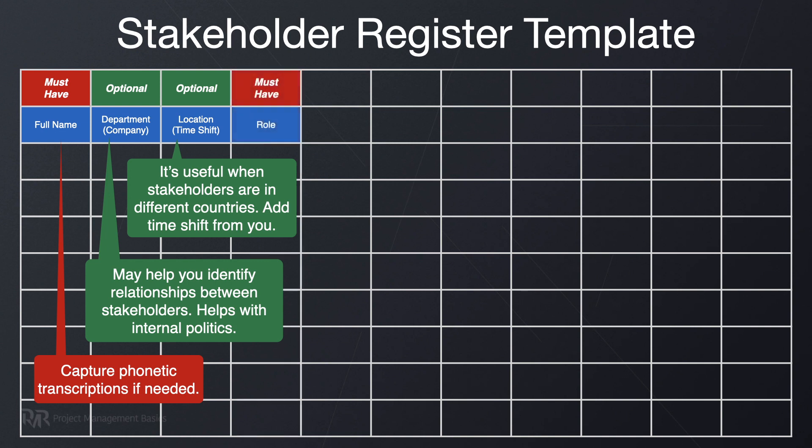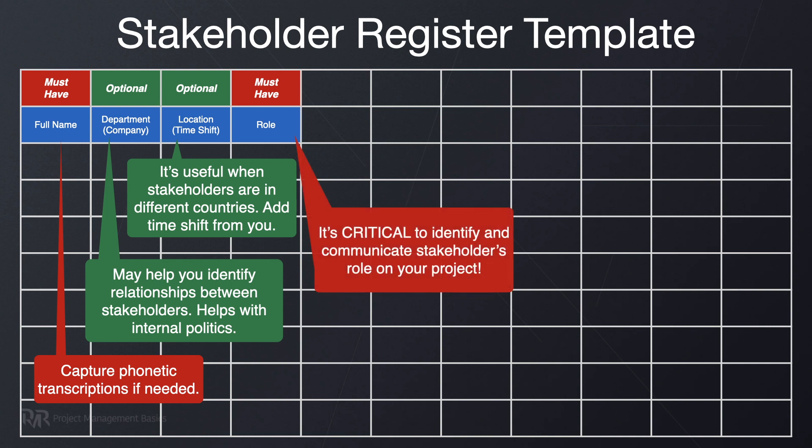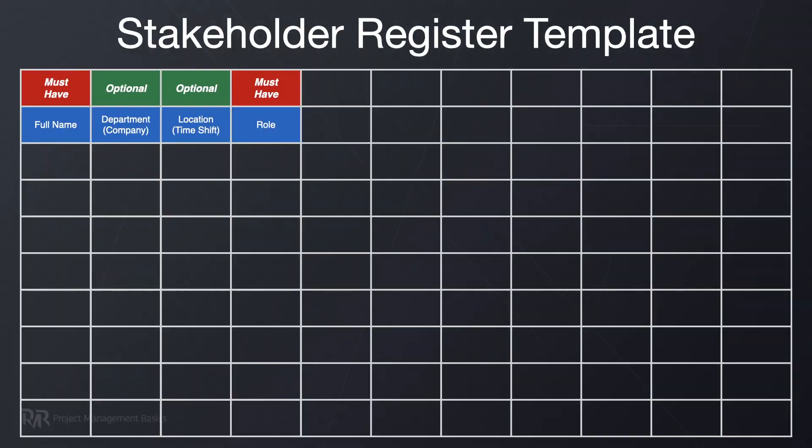After that, describe their role in the project — it's utterly essential. Each stakeholder should have a clear role and responsibilities. Some stakeholders will impose their role in the project on you, but there'll be other stakeholders whose role and responsibilities you'll have to develop and explain. You should be proactive here — don't assume they know it.